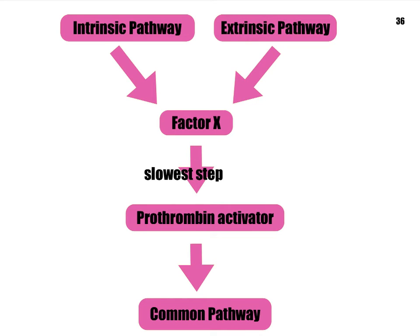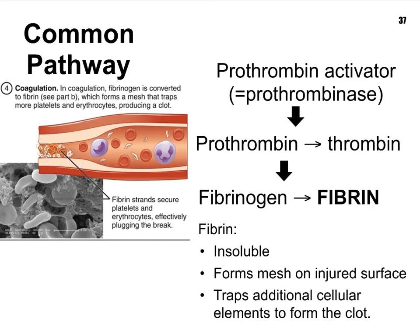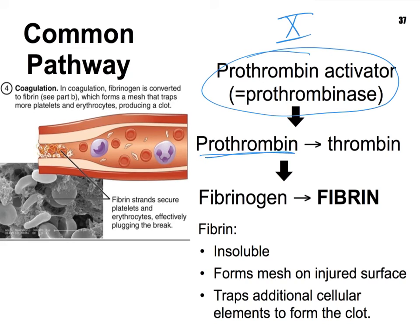Both pathways, with the help of activated clotting factors, are going to ultimately produce clotting factor 10. And once we have clotting factor 10, we can kick in to our common pathway with the help of yet another proenzyme called the prothrombin activator. Let's focus on the common pathway: both the intrinsic and extrinsic pathways ultimately produce clotting factor 10, and once we have that, a prothrombin activator or prothrombinase can convert prothrombin into thrombin — prothrombin being inactive and thrombin being active.